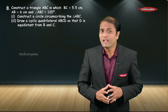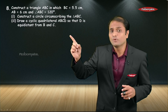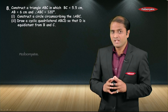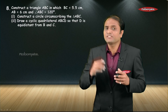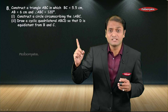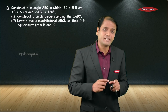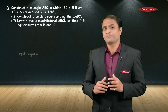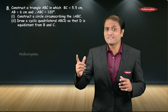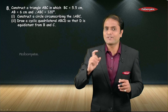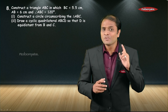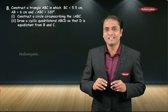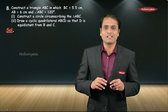The problem gives us BC = 5.5 centimeter, AB = 6 centimeter, and angle ABC = 120 degrees. First, we have to construct this triangle. After constructing this triangle, we are asked to construct a circle circumscribing the triangle ABC — that is, the circumcircle of triangle ABC. Next, we need to draw a cyclic quadrilateral ABCD so that D is equidistant from B and C.